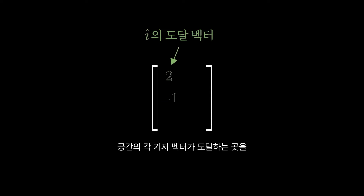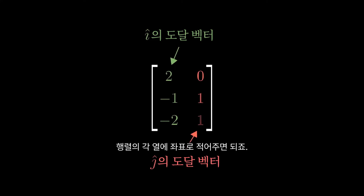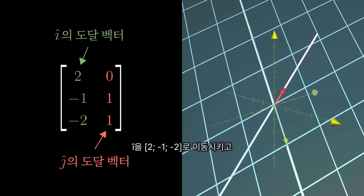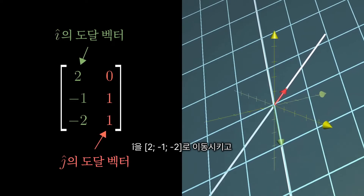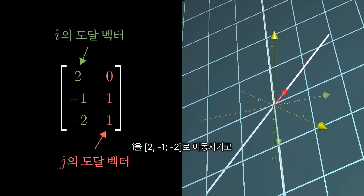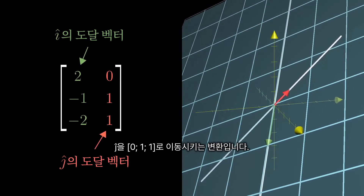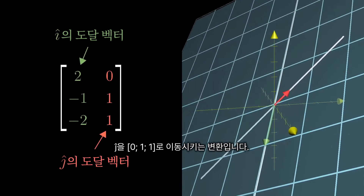Encoding one of these transformations with a matrix is really just the same thing as what we've done before. You look at where each basis vector lands, and write the coordinates of the landing spots as the columns of a matrix. For example, what you're looking at here is an output of a transformation that takes i-hat to the coordinates 2, negative 1, negative 2, and j-hat to the coordinates 0, 1, 1.